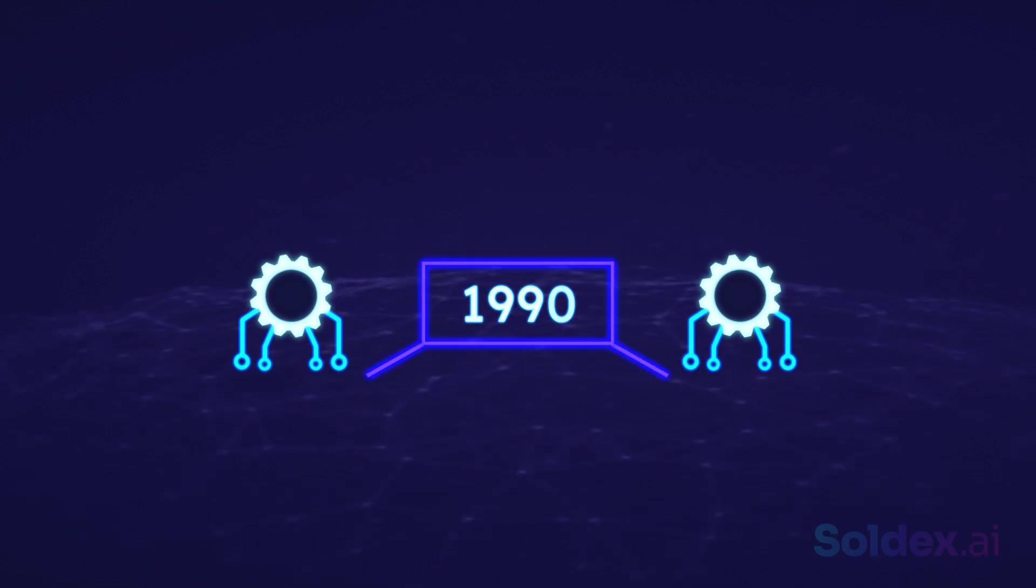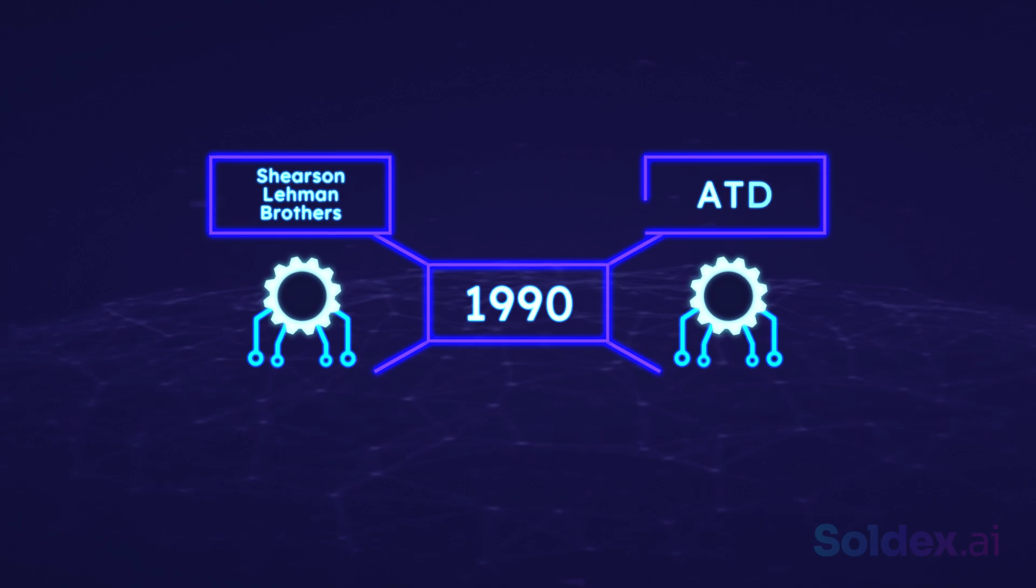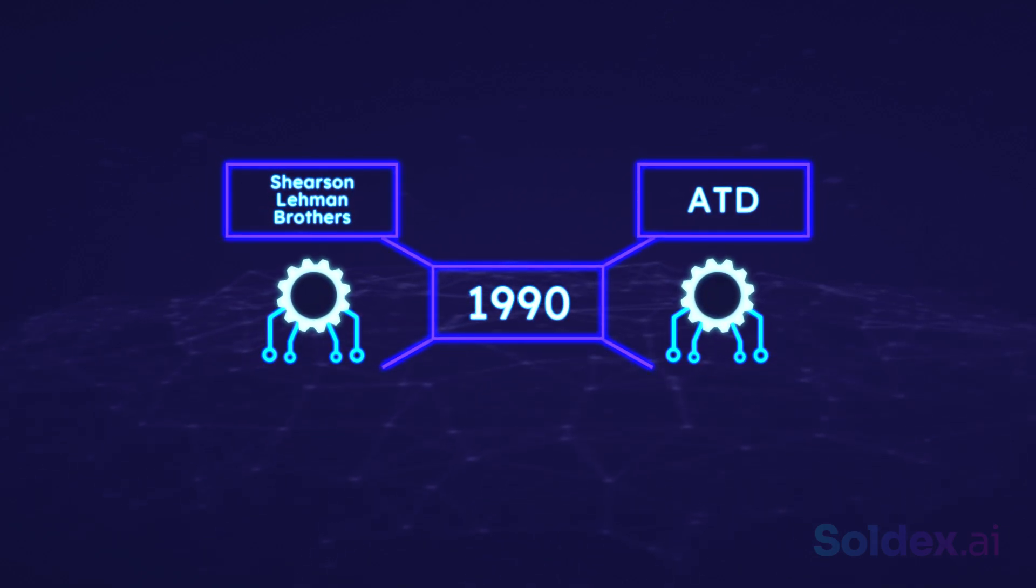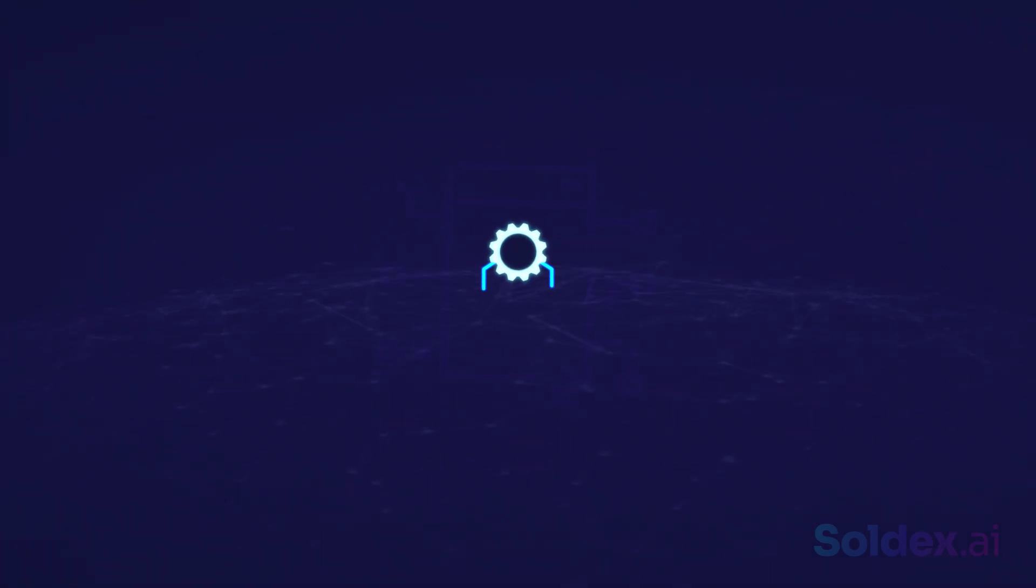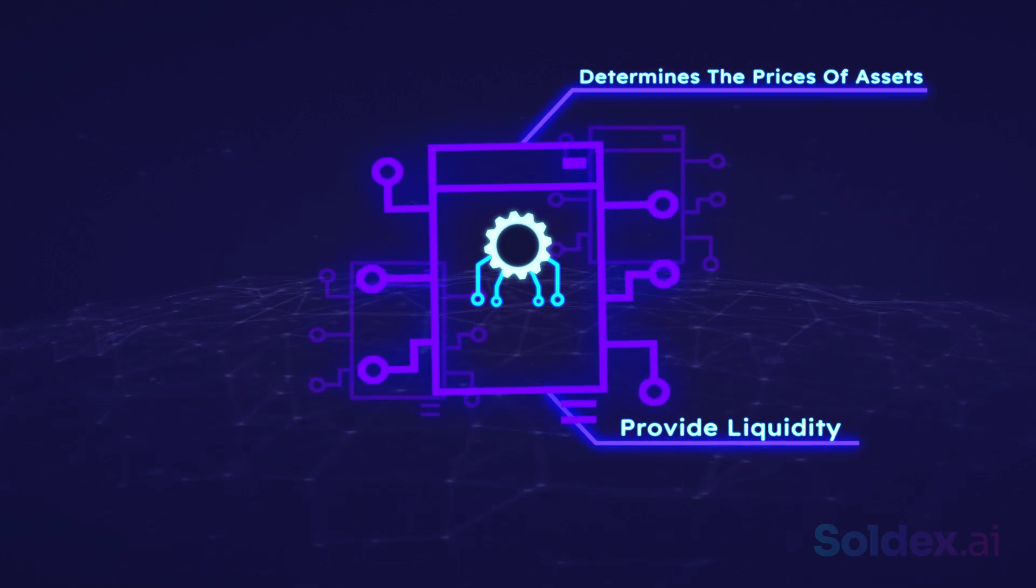AMMs were first used in the early 1990s by Shearson Lehman Brothers and ATD to avoid the manipulations and issues caused by human market makers. AMMs use smart contracts to determine the prices of assets and to provide liquidity.